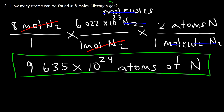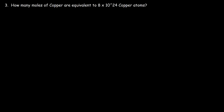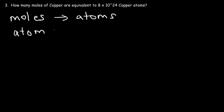Always look at the substance you're dealing with. You need to know if it's composed of molecules or atoms, because you might have an additional step. Number 3: how many moles of copper are equivalent to 8 times 10 to the 24 copper atoms? This is basically the reverse of the first problem — we're given the number of atoms and we want to convert to moles, and we can still use Avogadro's number for that.